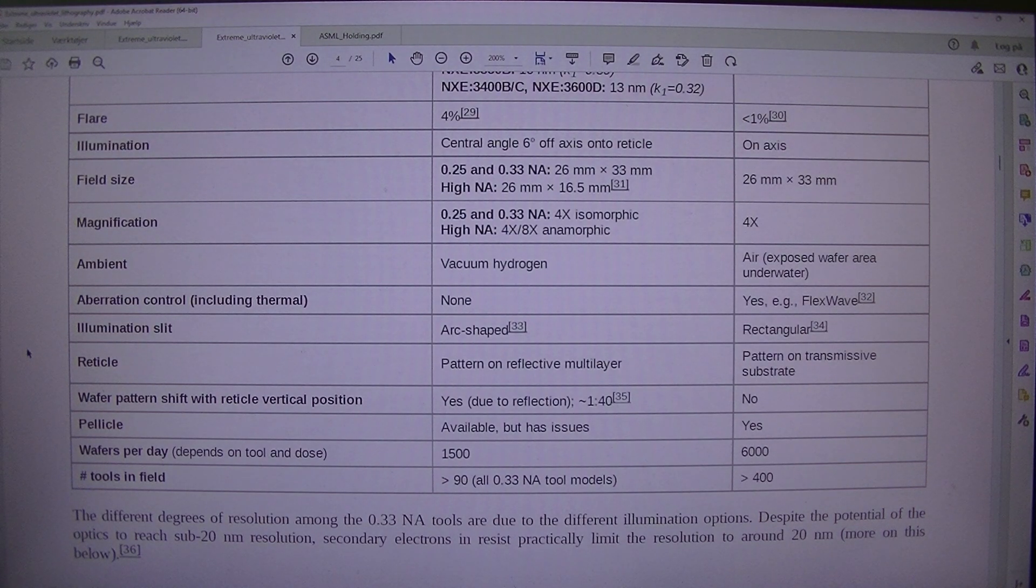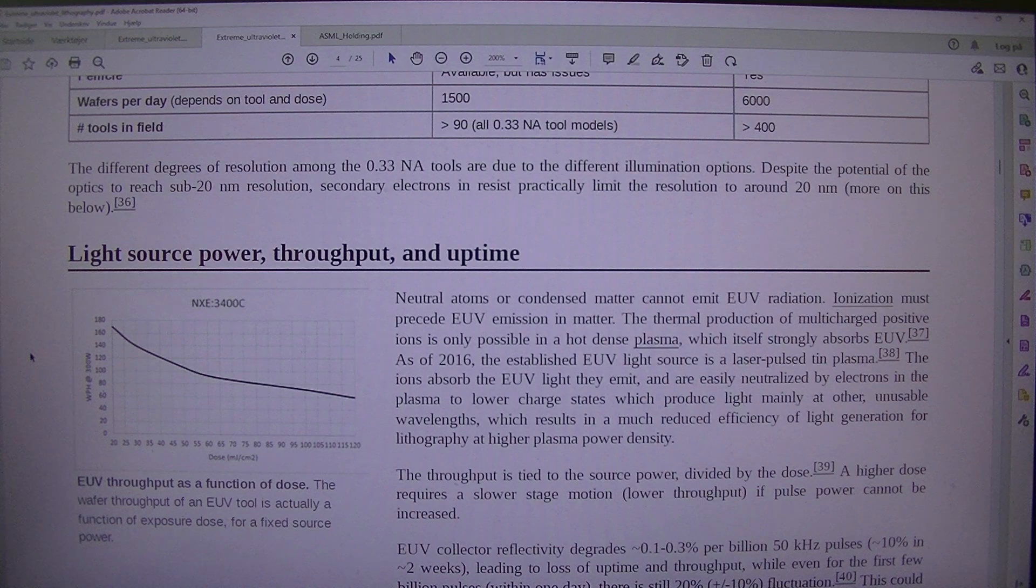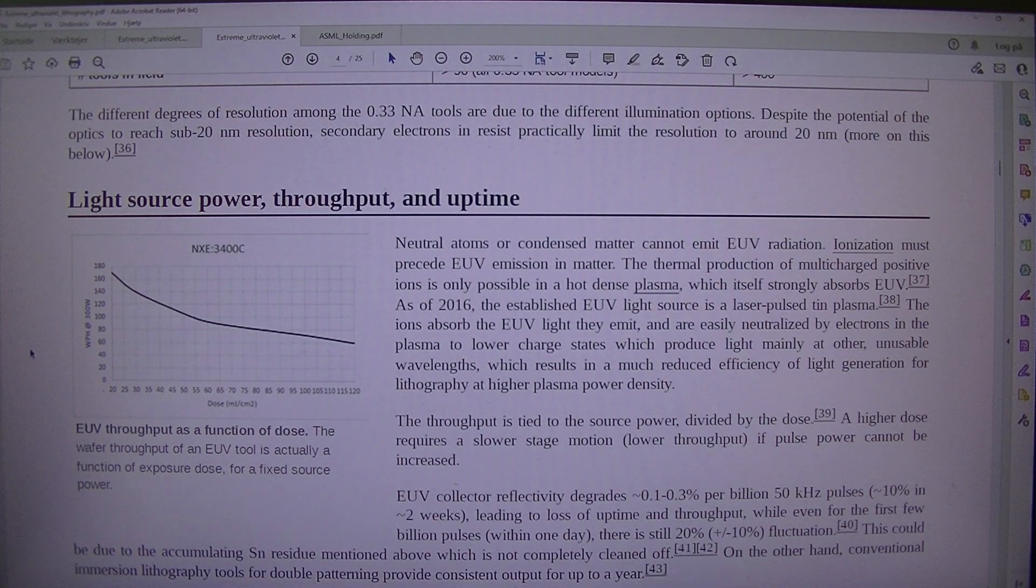The different degrees of resolution among the 0.33 numerical aperture tool models are due to the different illumination options. Despite the potential of the optics to reach sub-20 nm resolution, secondary electrons in resist practically limit the resolution to around 20 nm, more on this below.